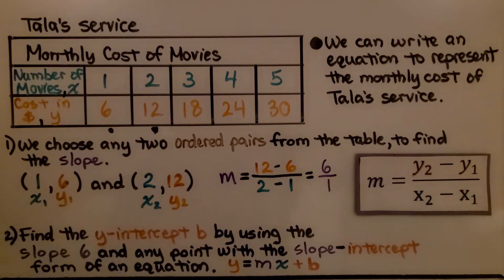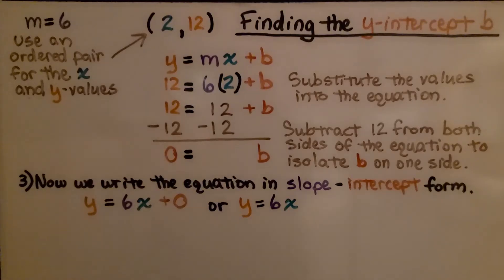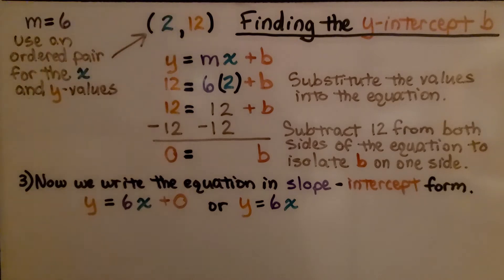Now we find the y-intercept b by using this slope of 6 and any ordered pair with the slope-intercept form of an equation: y = mx + b. For our equation, we know m, the slope, is 6. We use an ordered pair for the x and y values — I chose (2, 12).